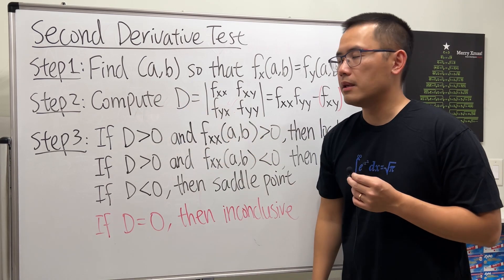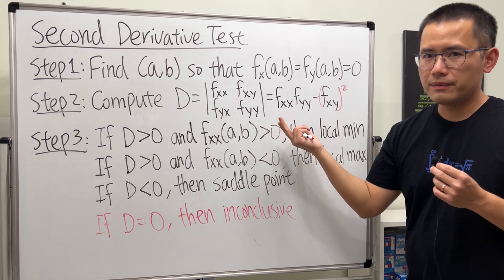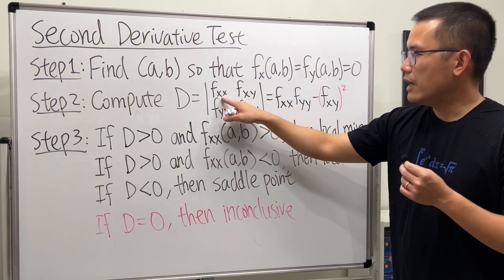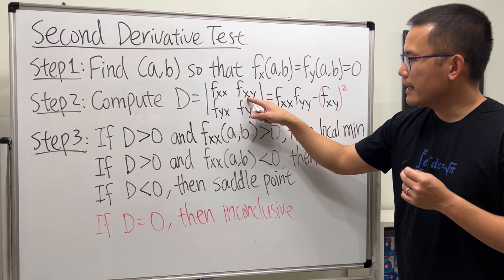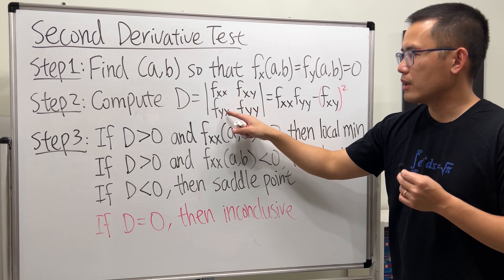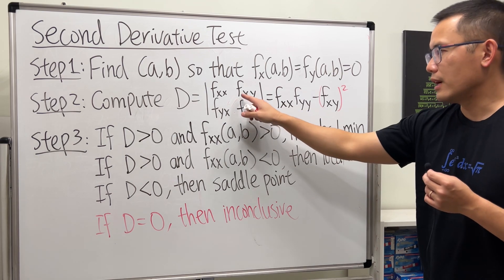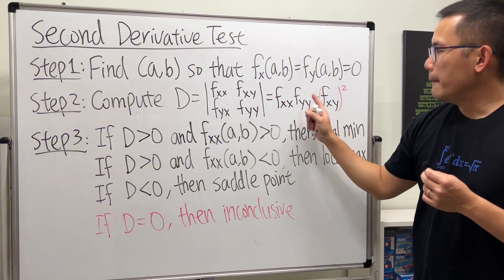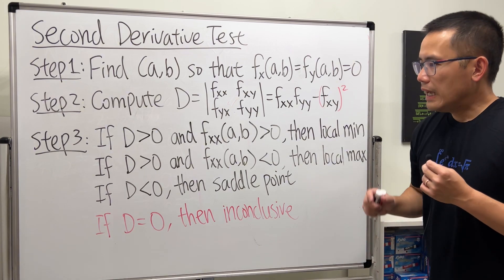Then we are going to compute the D value at (a, b) using this formula. To remember the formula, think of putting it into a determinant: f_xx and f_yy on the diagonal, f_xy and f_yx on the other. Since mixed partials are equal, we get D = f_xx · f_yy − (f_xy)².